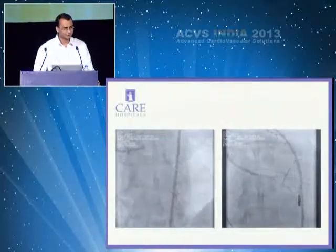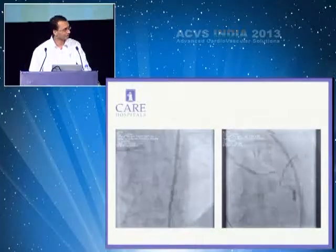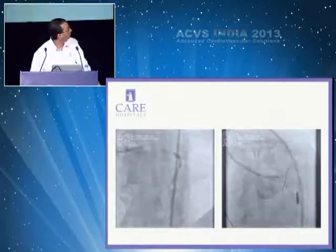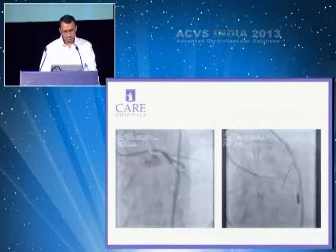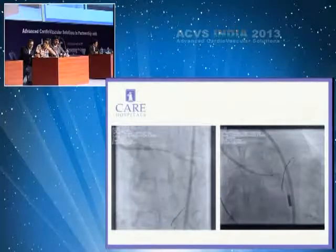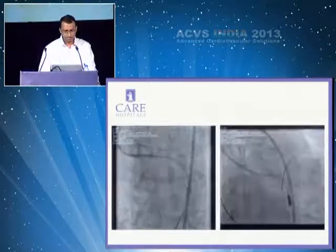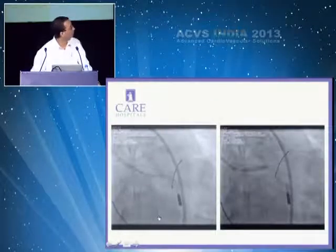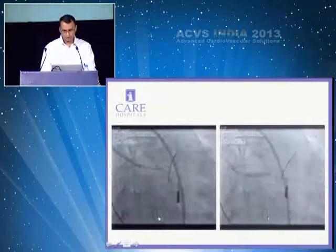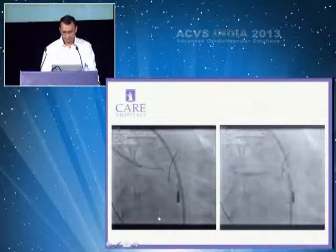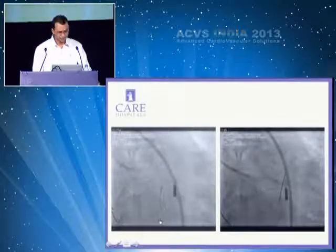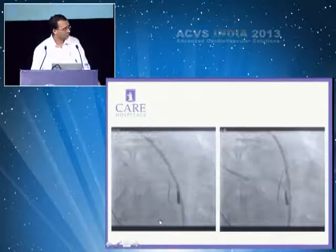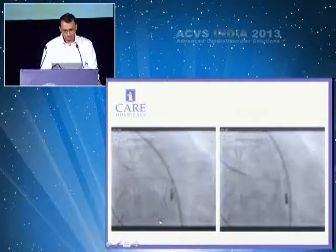We did not think we should predilate because we didn't have too much time — pressures were dropping and he was very unstable. We actually had a run of ill-sustained VT on the table as well. So we just took in a Promus Element 4x16 and positioned it in apicranial view, then dilated the stent. After the dilatation the patient became stable; he tolerated the dilatation very well. It was a very quick dilatation and deflation. We then withdrew the balloon and dilated the ostium again so that it flares up the ostium.